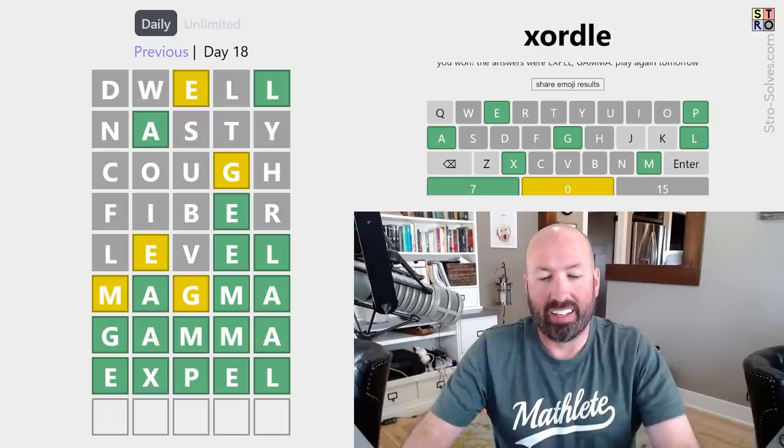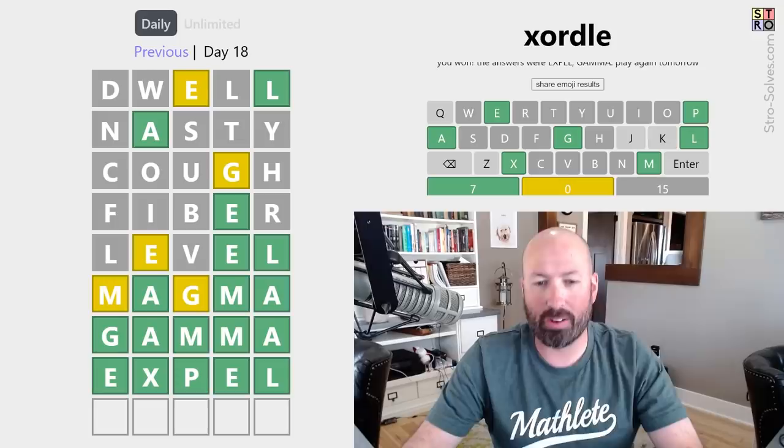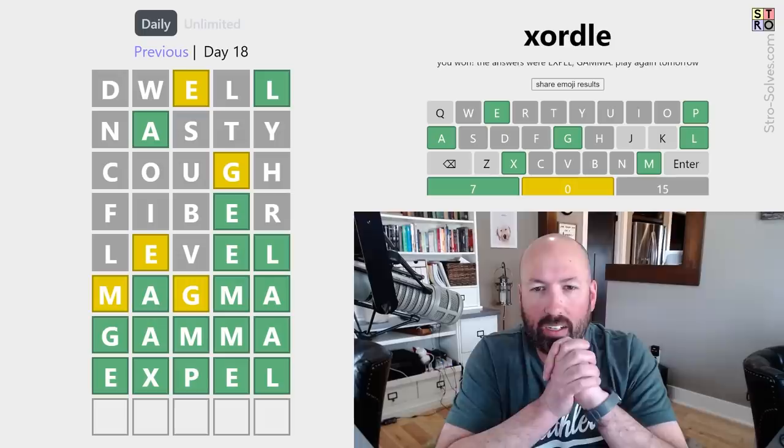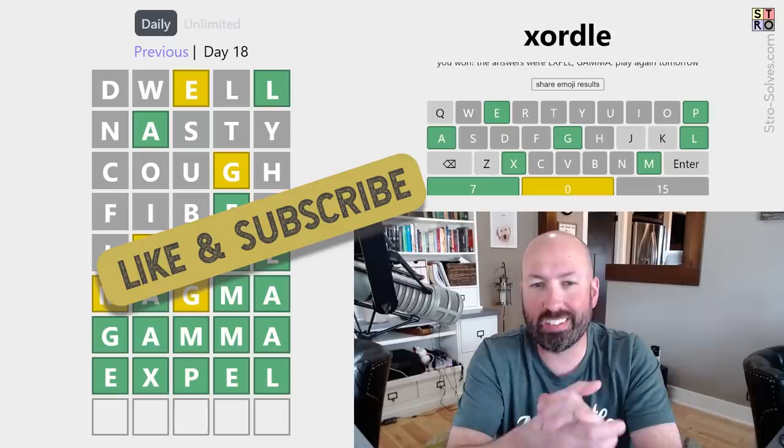All right. That was tricky. I can't believe I did magma instead of gamma, but you know, that's just the first thing that came to mind. So, gamma and expel. Very interesting. Yeah, I can see why people were having trouble with those. Xordle's really weird how you get the clues, but you don't know which word the clues apply to. Pretty cool, though. I enjoy that a lot. So, there you go. That was today's Xordle. Let me know how you did with it. Be sure to like and subscribe to help out the algorithm, and I'll see you again soon with some more puzzles.